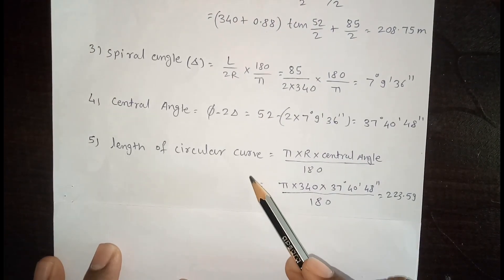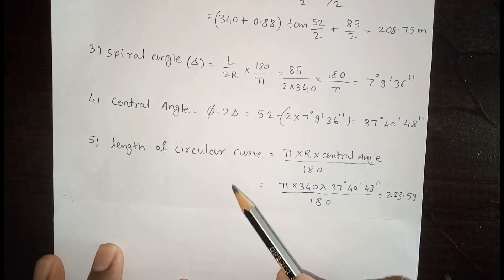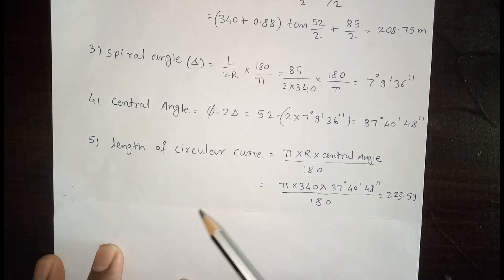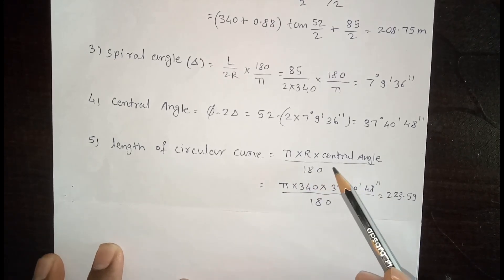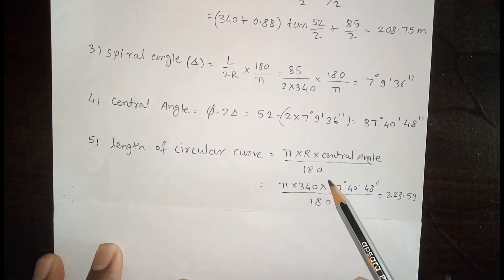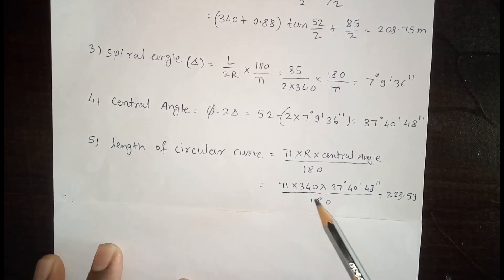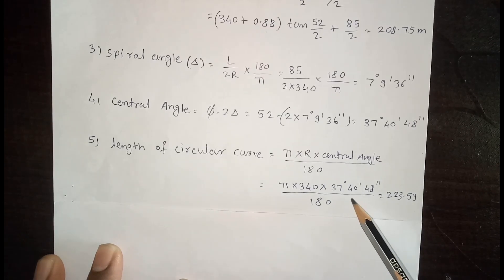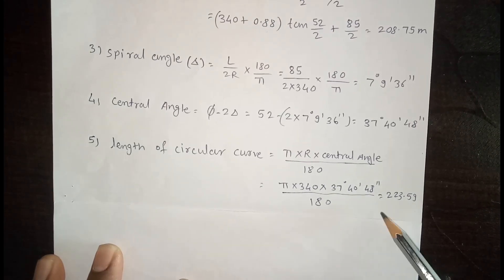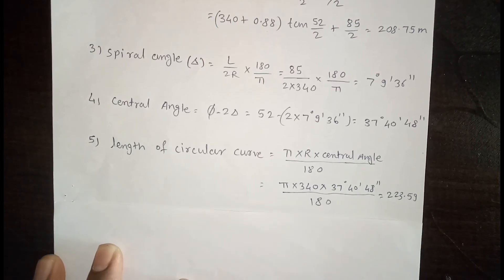Now, the length of the circular curve. We have the length of the transition curve, which is 85 meters. The length of the circular curve is: πR × (central angle / 180). With R = 340 and central angle = 37° 40' 48", the length of the circular curve is 223.59 meters.